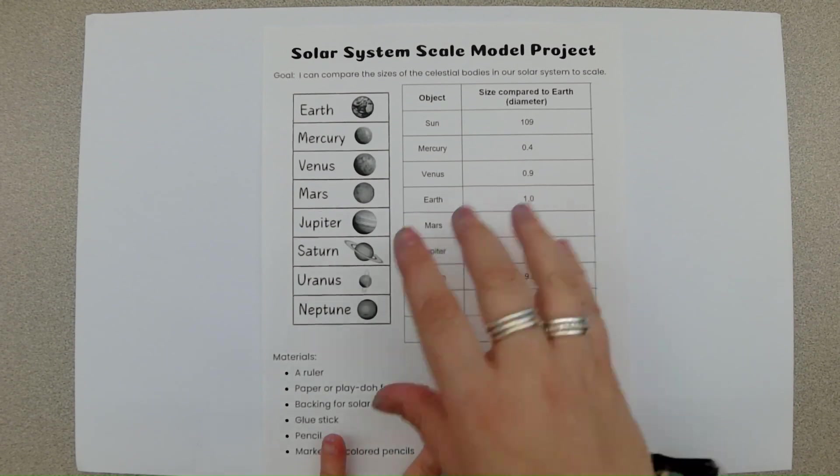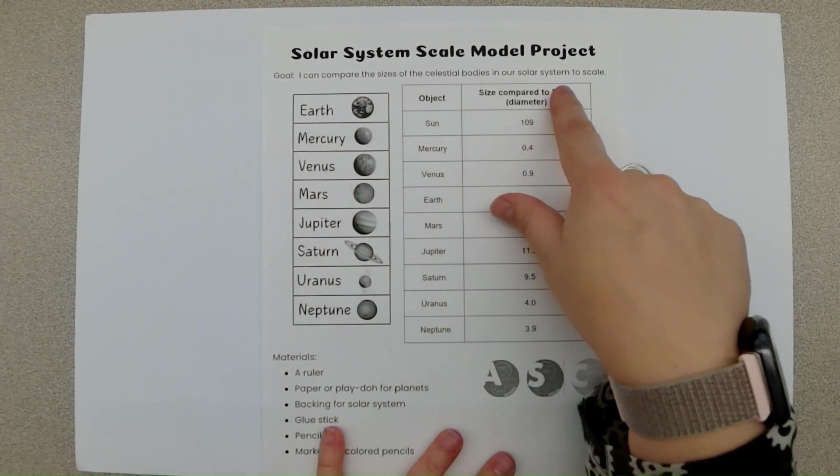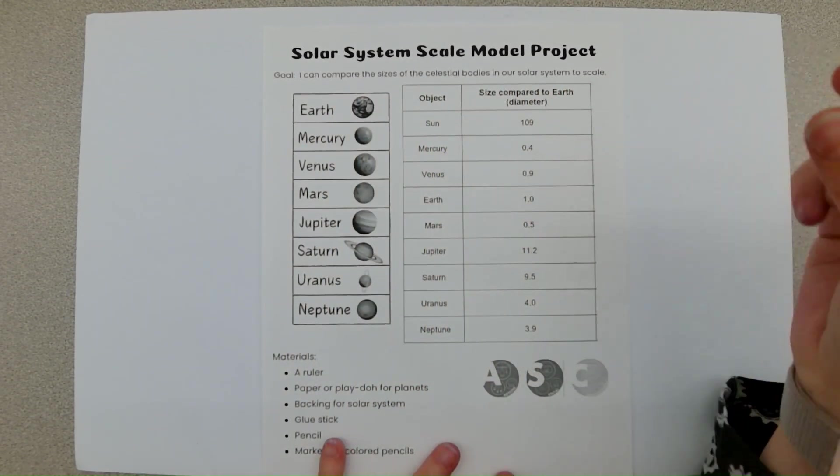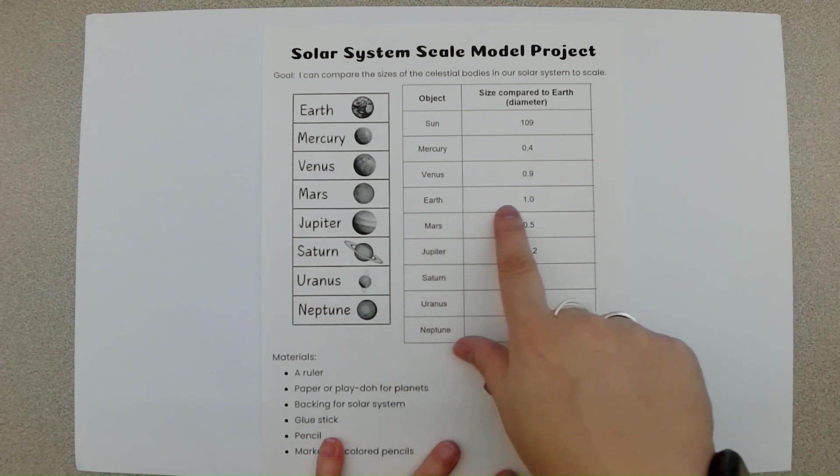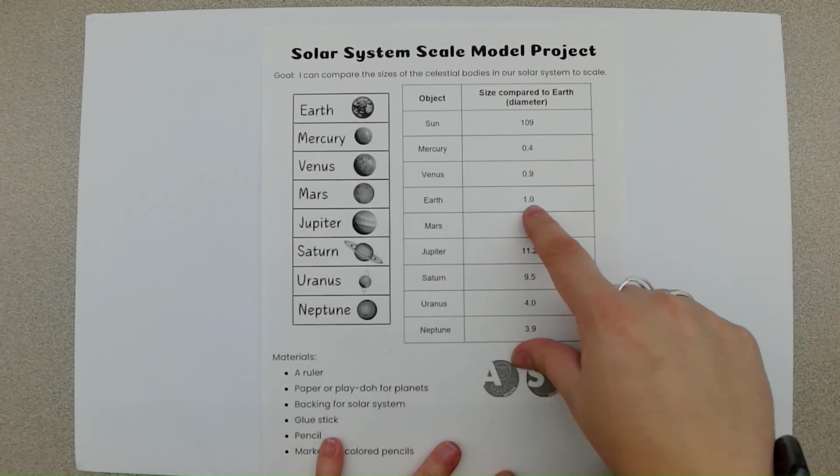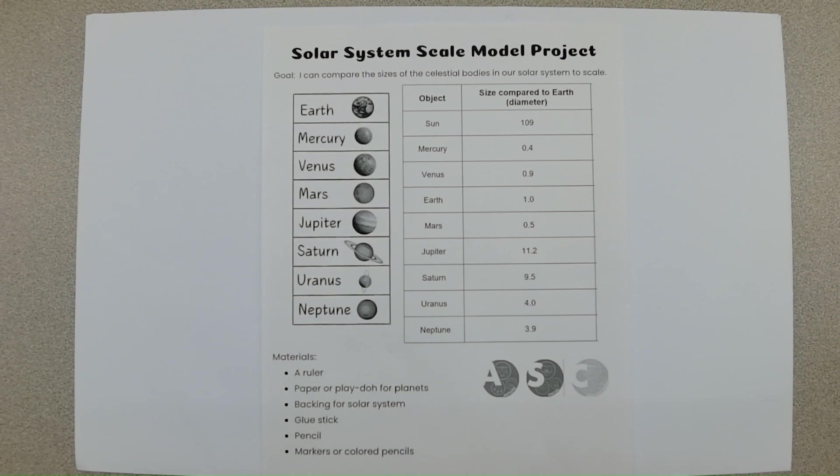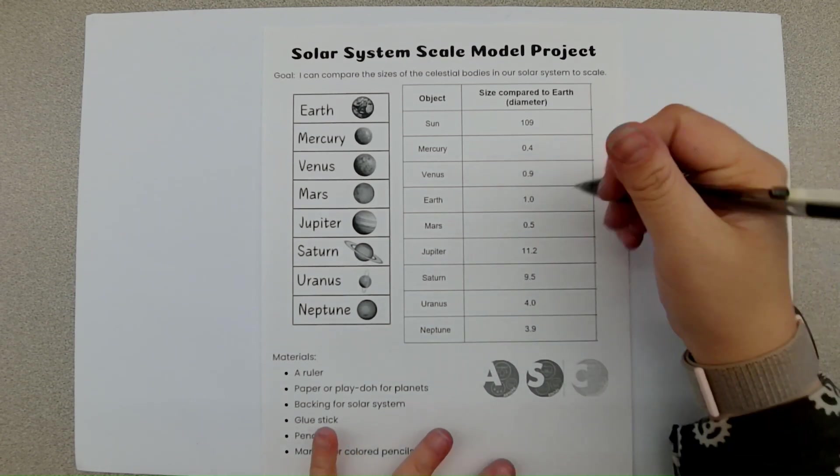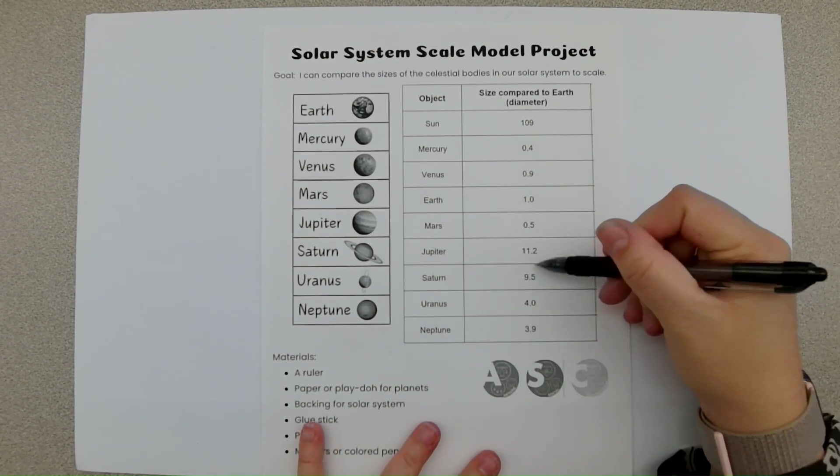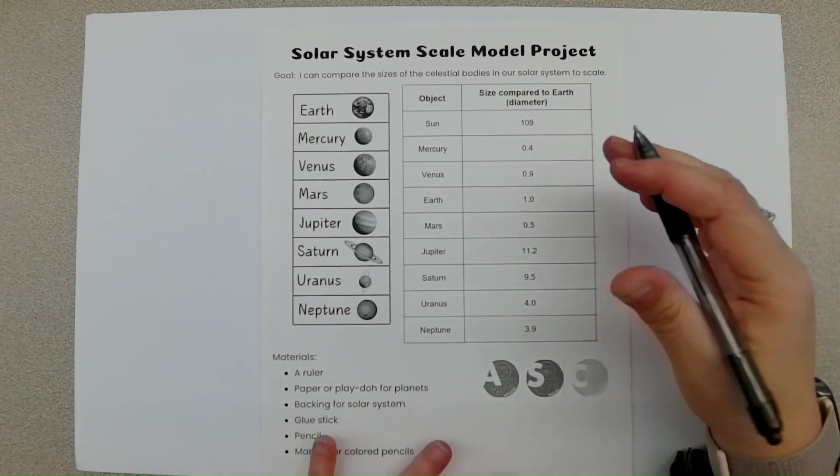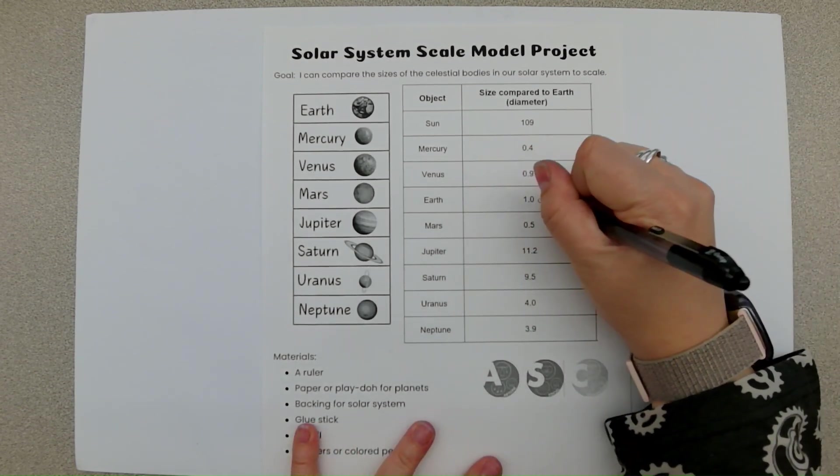This is the handout that you're going to get in class. We're trying to compare the sizes of the different celestial bodies of our solar system to scale. So we're going to use Earth as our base, and we're going to be working in centimeters. Because if we did inches, these solar system scales are going to be huge.